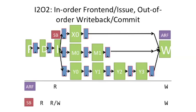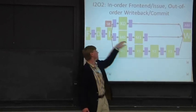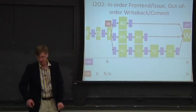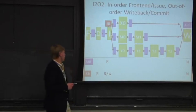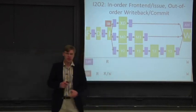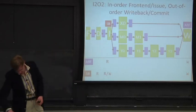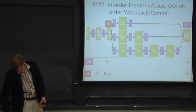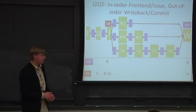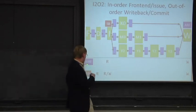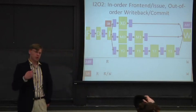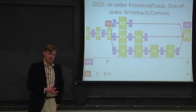In this processor, we're going to have basically three pipelines: a long multiply pipeline, a memory pipe that takes two cycles, and a short ALU pipe on the top. We have a scoreboard like we had before, and this is going to track where data is available in the pipe. The architectural register file is sitting at the end. So this looks relatively similar to the in-order issue, in-order write-back, in-order commits processor.